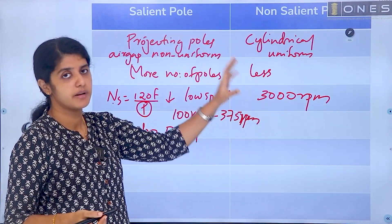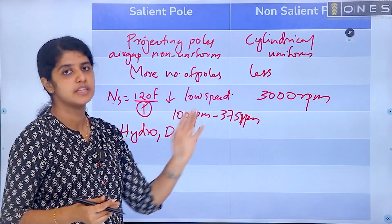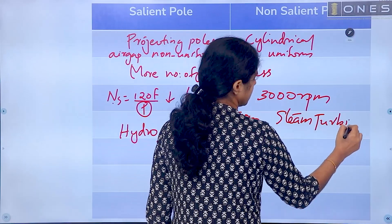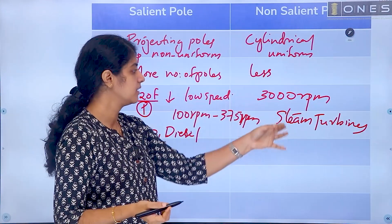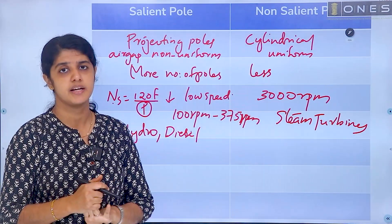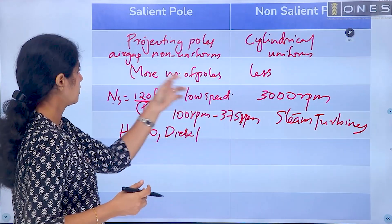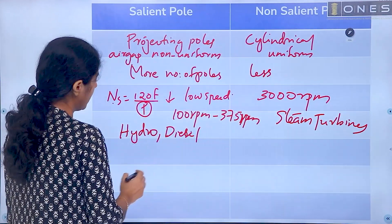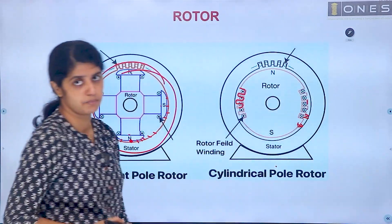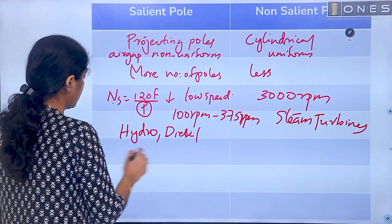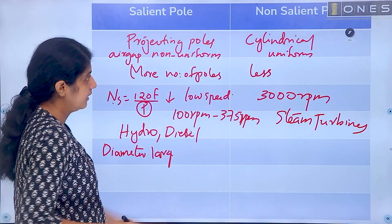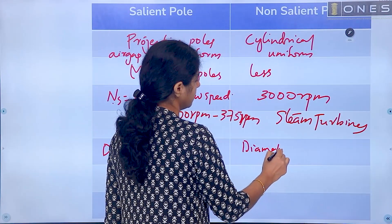For example, in a thermal power station, you will see the cylindrical structure because steam turbines are used. Steam turbines operate at high speed, so the non-salient (cylindrical) rotor is used in thermal plants. Now, comparing the physical size: in the salient pole, the diameter of the rotor is large, whereas in the non-salient pole cylindrical rotor, the diameter is small.